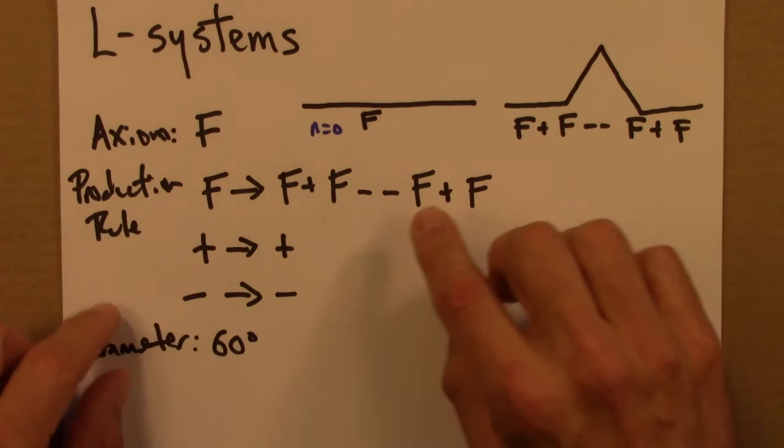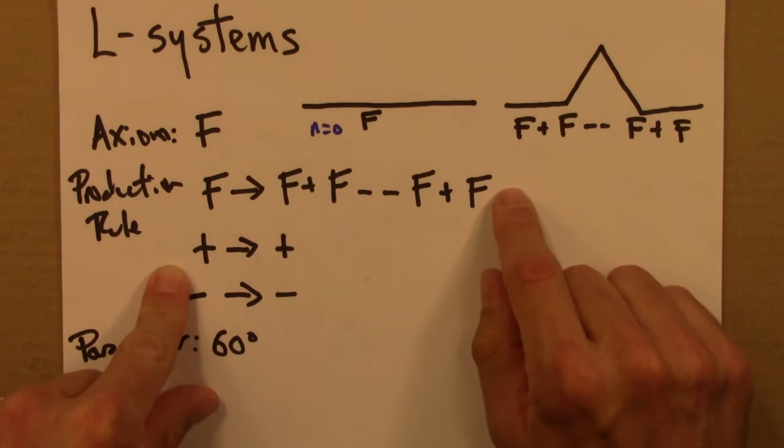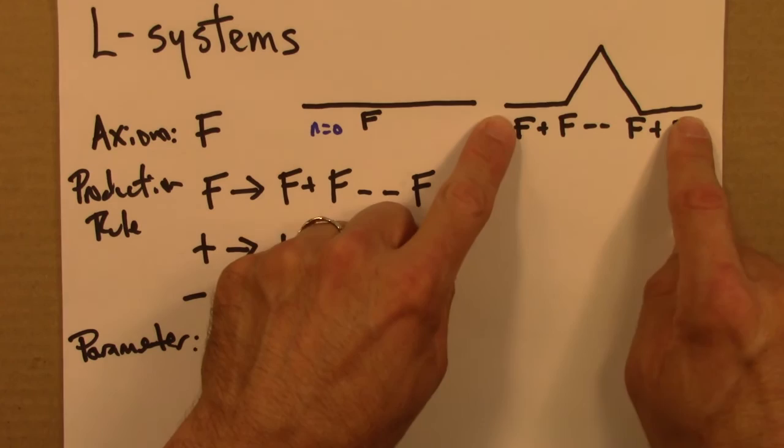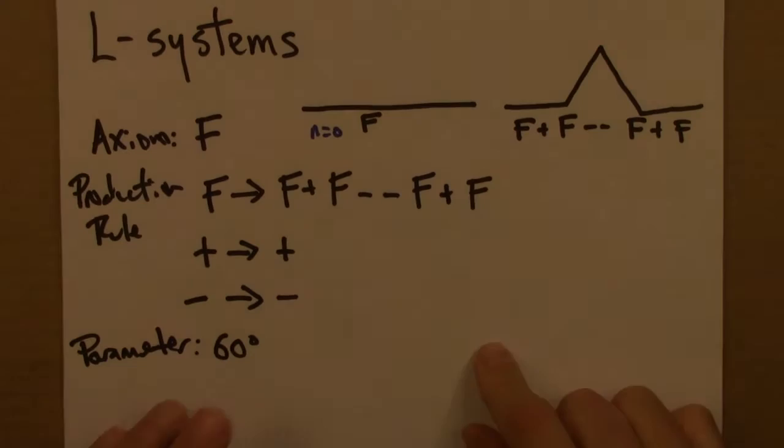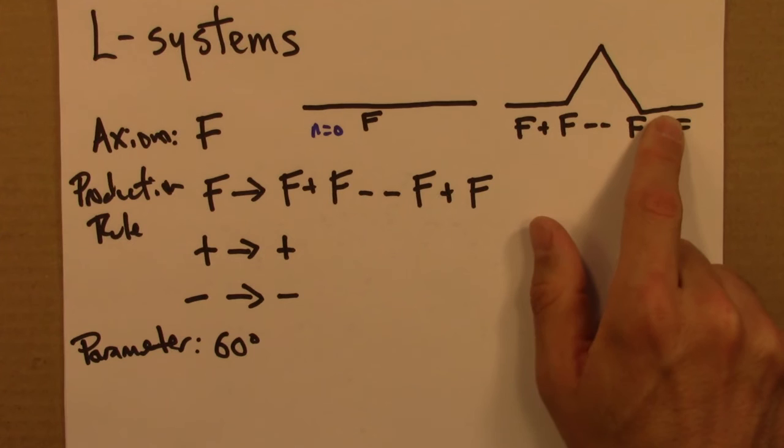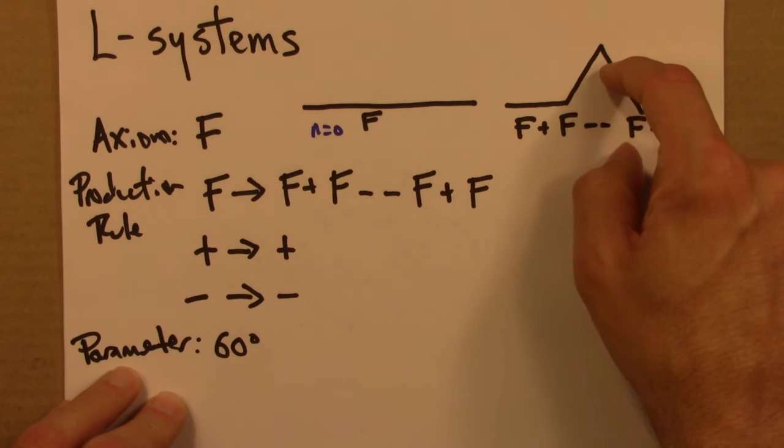This is a sequence of instructions that tells you how to go from this line segment to this line segment. Those are the rules that get us from here to here. Now we would apply those rules again. Every line segment F gets replaced by this shape. And that's exactly what this production rule does.